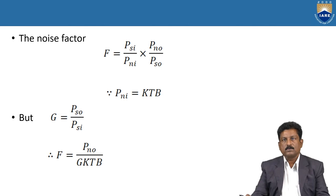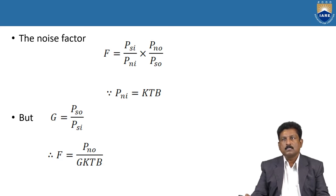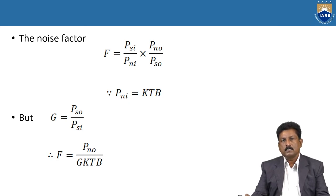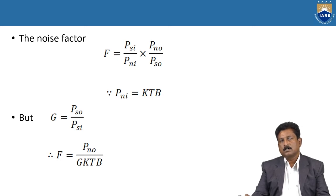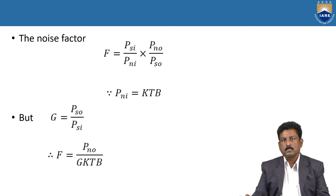The noise factor F equals (PSI / PNI) × (PNO / PSO) — input side over output side. PNI equals KTB (in terms of temperature). The gain G equals PSO / PSI. Overall, F equals PNO divided by (G · KTB). The values of K (Boltzmann's constant) and T and B (bandwidth) are given by the standard formula, and based on this we calculate the noise factor.